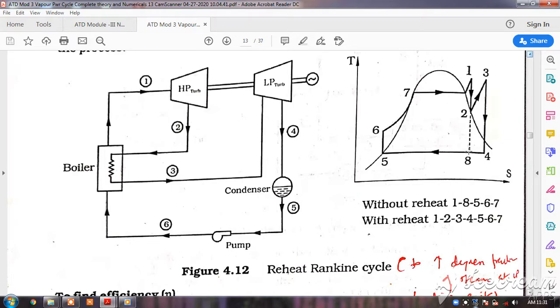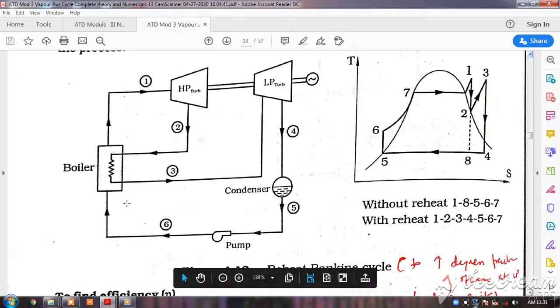There is something called reheat cycle. You need to understand this diagram. The boiler is common. First it goes to high pressure turbine, exhausts, goes to the low pressure turbine, then exhausts, comes to the condenser, condenses, and pumps back to the boiler. So this is the reheat cycle for improving the efficiency.